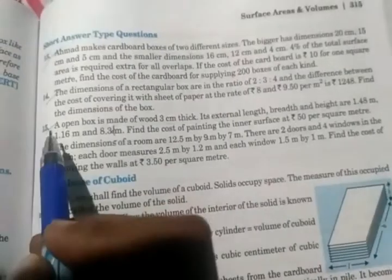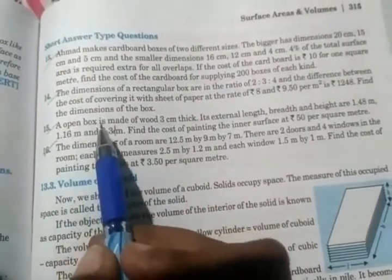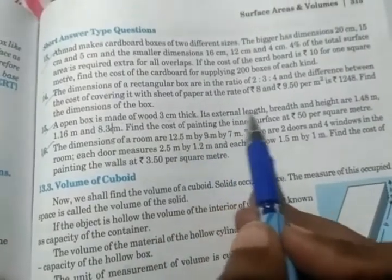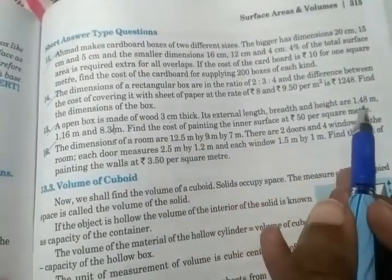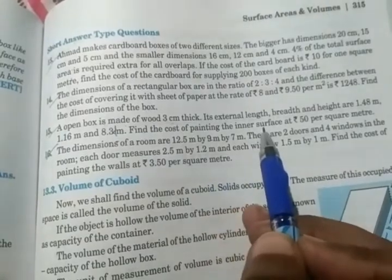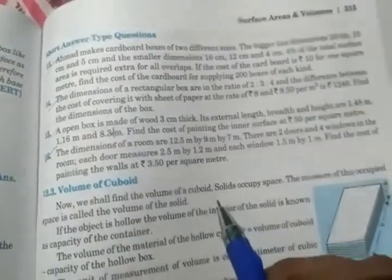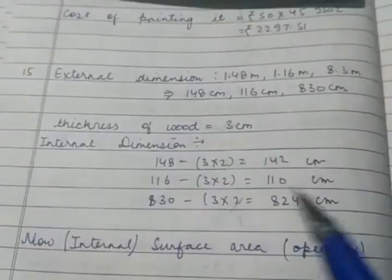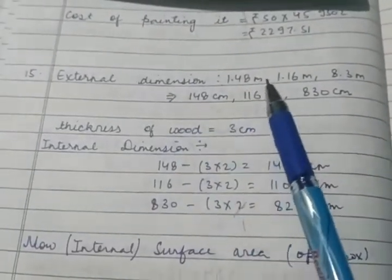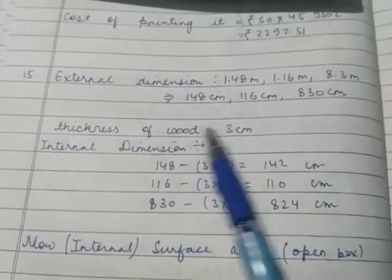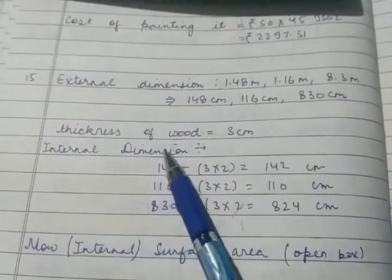The next question is question number 15. An open box is made of wood 3 cm thick. Its external length, breadth and height are given. Find the cost of painting the inner surface at rupees this much. So you have external length, breadth and height given.